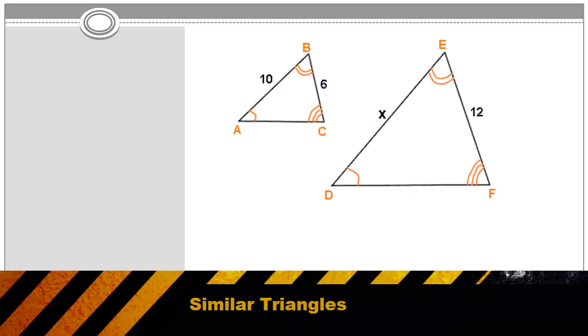You should also be aware of a concept known as similar triangles. Similar triangles occur when two triangles are different sizes, but they have the exact same shape. In other words, the length of the sides might be different, but the angle measures are the same.